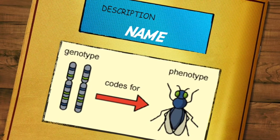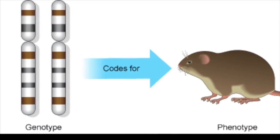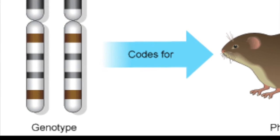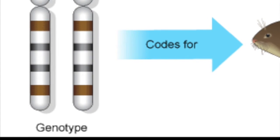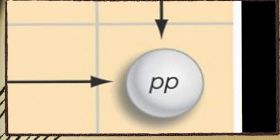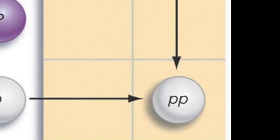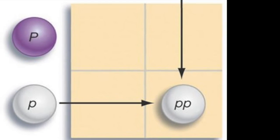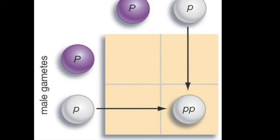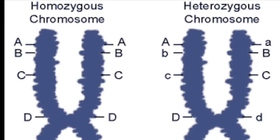Genotype is a way to describe the combination of alleles an individual has for a certain gene. For each gene, an organism has two alleles — one on each chromosome of a homologous pair. Think of it as one allele from mom and one allele from dad. The genotype is represented by letter combinations such as capital T capital T, capital T lowercase t, or lowercase t lowercase t.